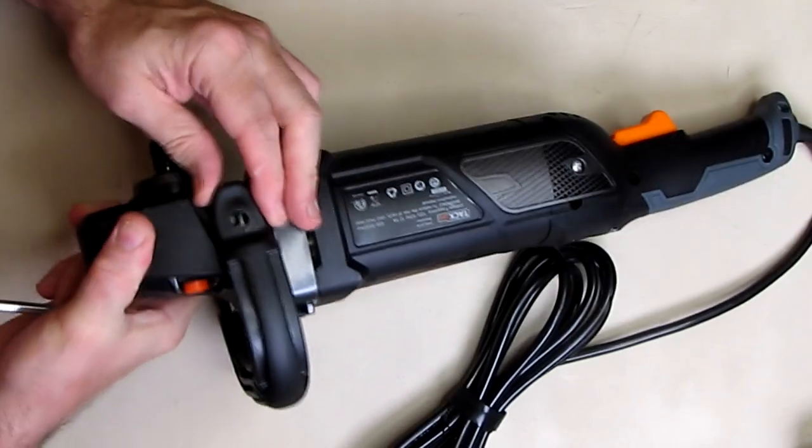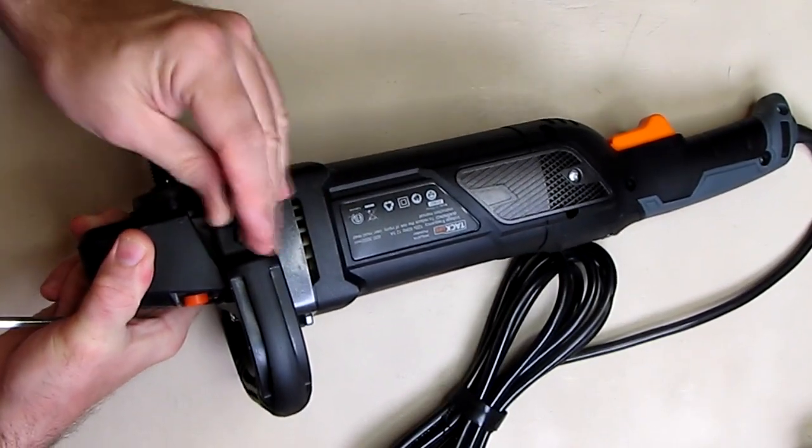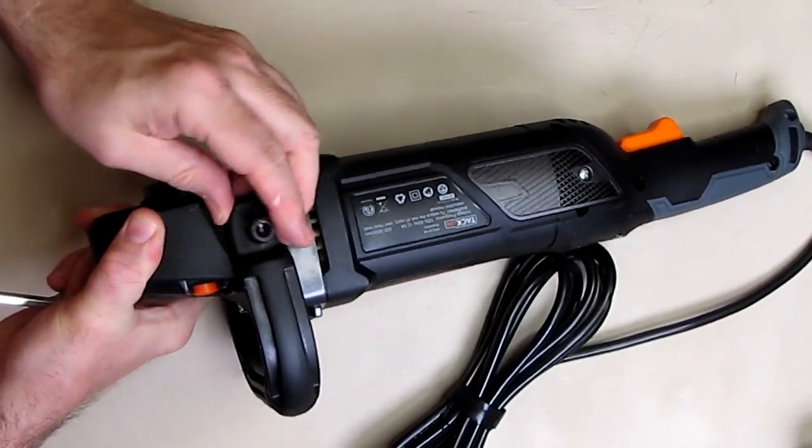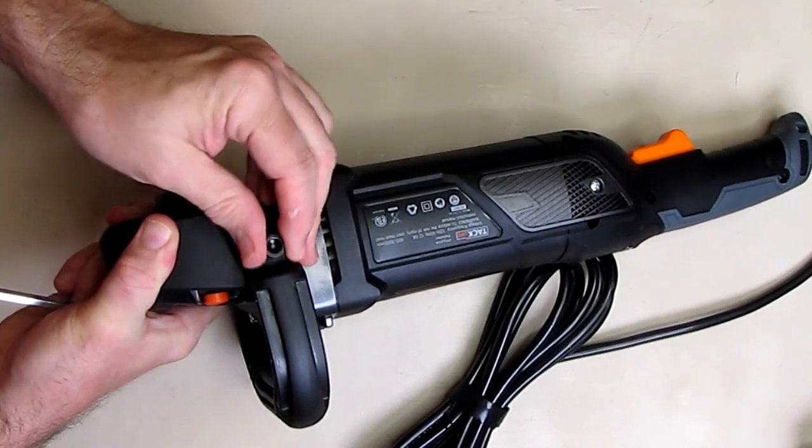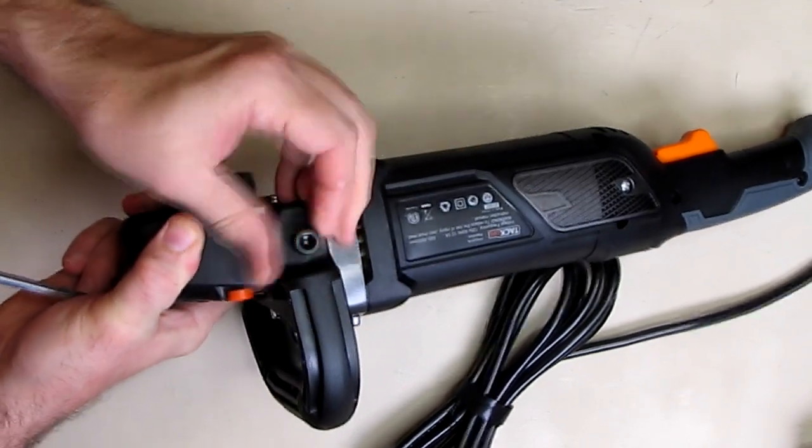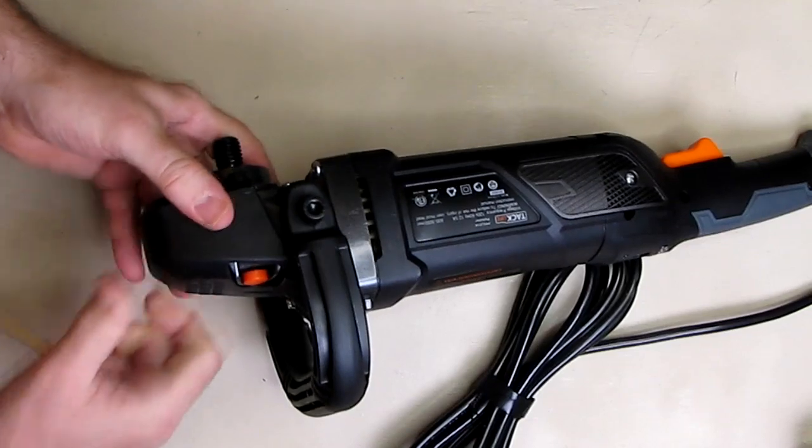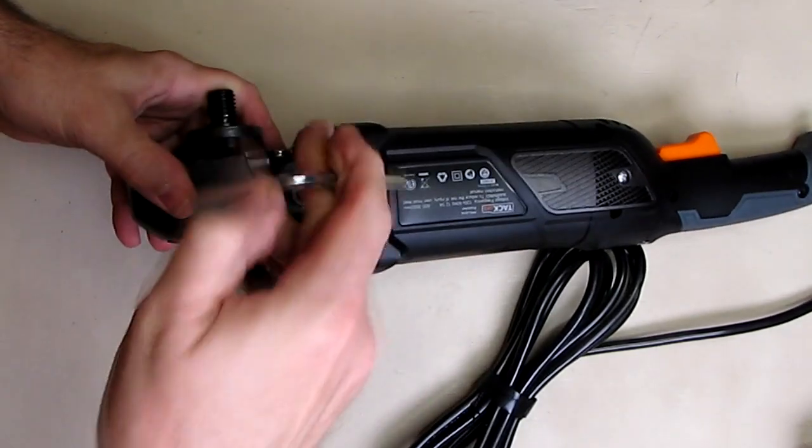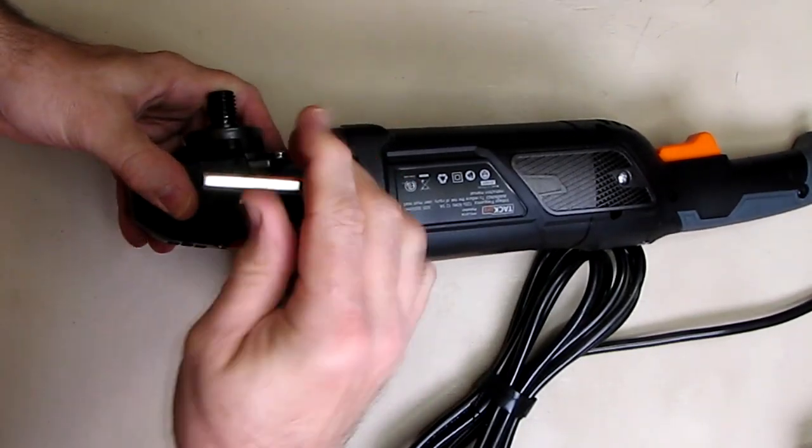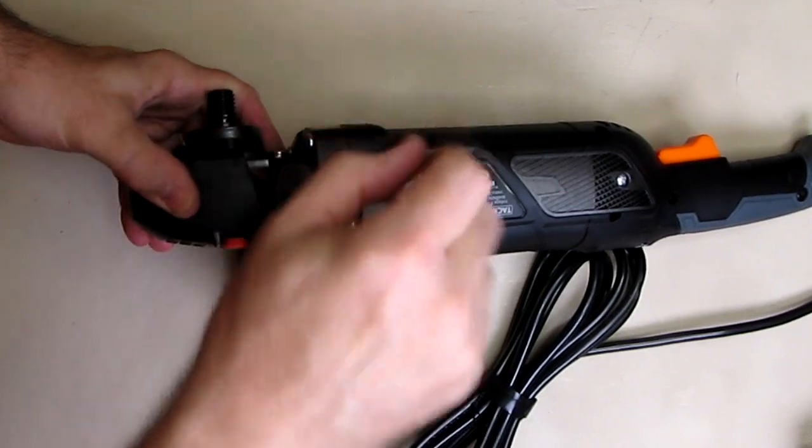Then on the other side, same process. Line it up with the hole and put the screw in there and turn the screw by hand initially. Then you could take this and tighten it by going clockwise using the wrench that it comes with.